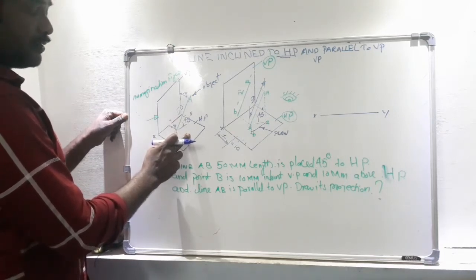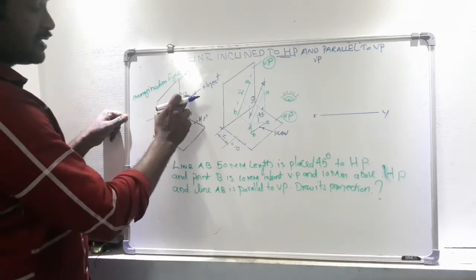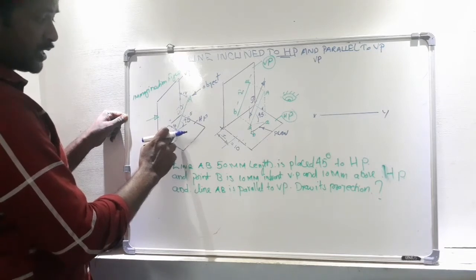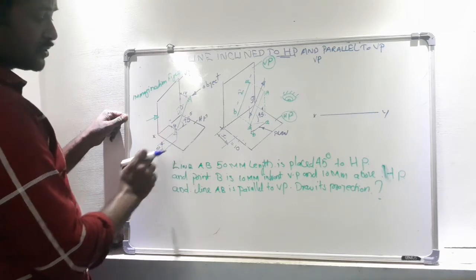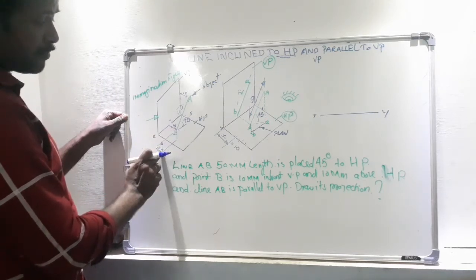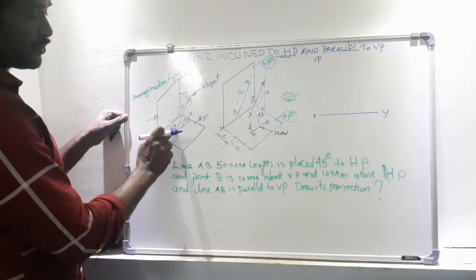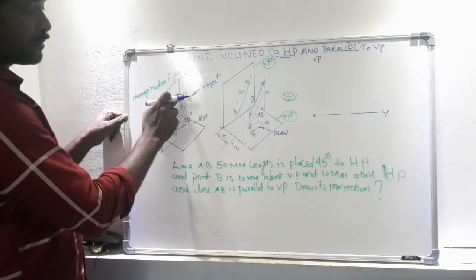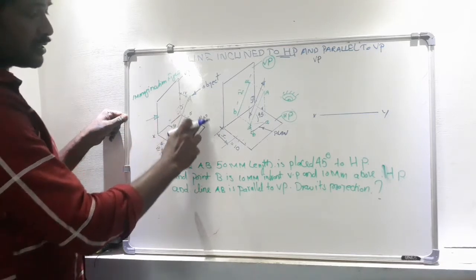We know that a line has minimum two points — point A and point B. Here, B is the lowest point and B is not touching HP. So we can say that point B is 10 mm above HP and 10 mm in front of VP. Similarly, point A is fixed 10 mm in front of VP.